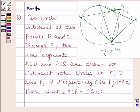Hi and welcome to the session. Let us discuss the following question. The question says two circles intersect at two points B and C.